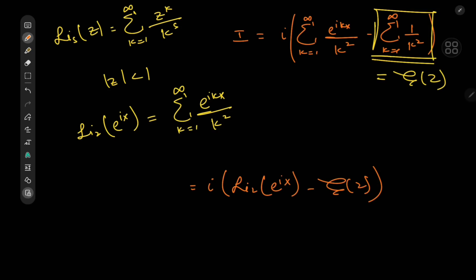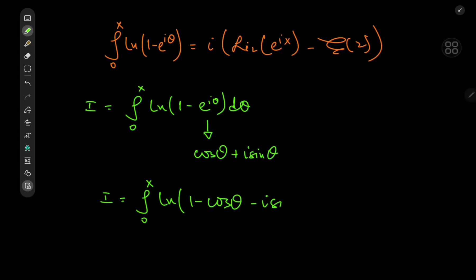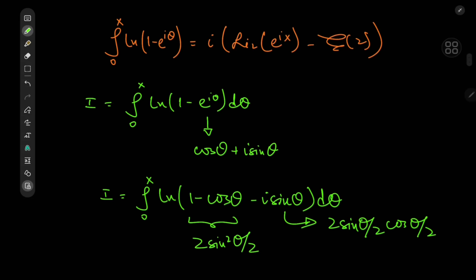That's quite nice, but we're not going to stop here — we'd like to derive more cool stuff from our integral. A more direct approach would be to expand the complex exponential using Euler's formula: e^(iθ) = cosθ + i·sinθ. So I can be written as the integral from 0 to x of log(1 − cosθ − i·sinθ) dθ. Using elementary trigonometry, 1 − cosθ equals 2sin²(θ/2) from the double angle formula, and sinθ = 2·sin(θ/2)·cos(θ/2).